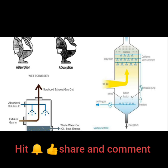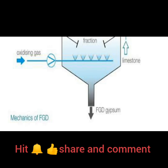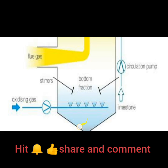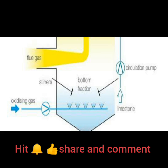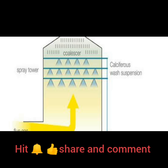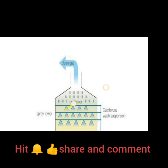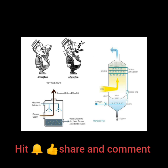Regarding the FGD mechanism: the diagram shows gypsum at the bottom, oxidizing gas and limestone going upward, a storage area with a circulation pump, and flue gas inlet at the top. We have a spray tower, calcareous wash suspension, a coal sensor, and clean gas outlet. This is how FGD works.